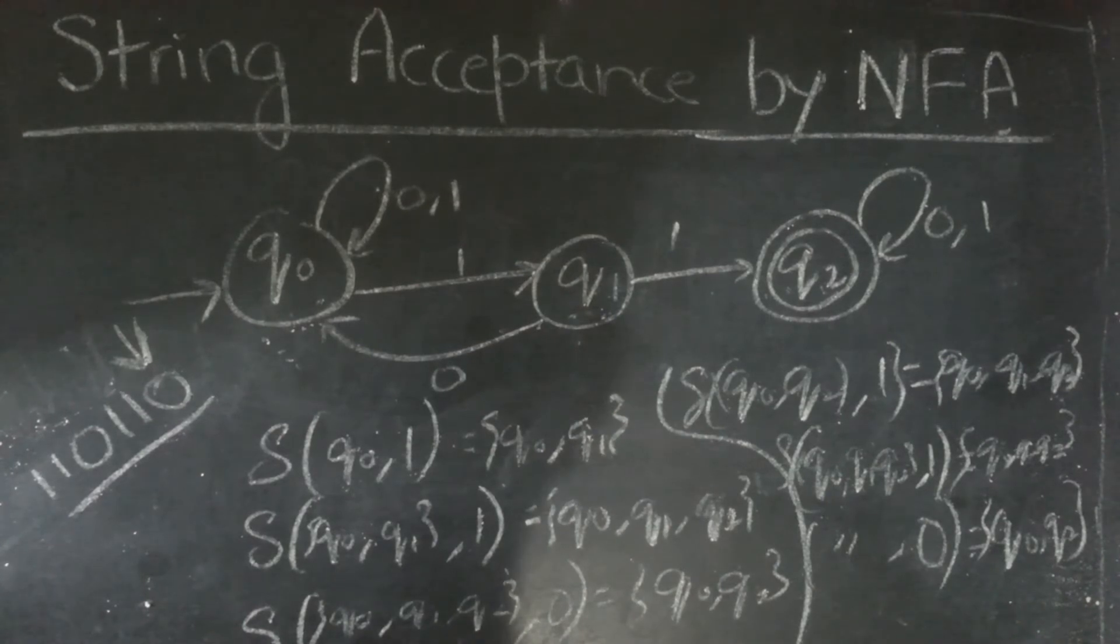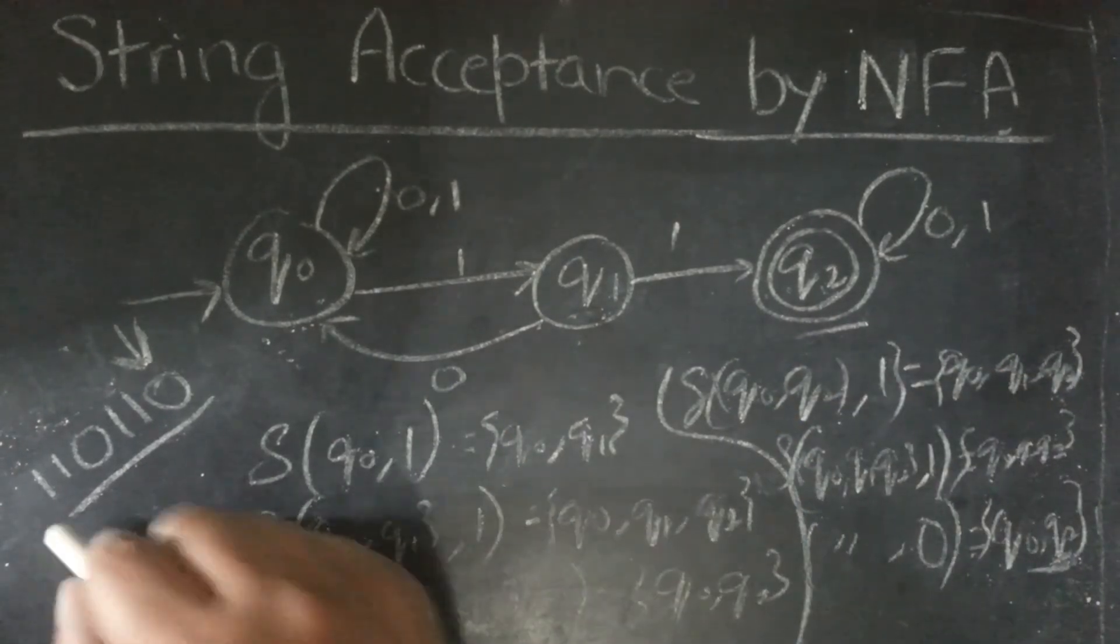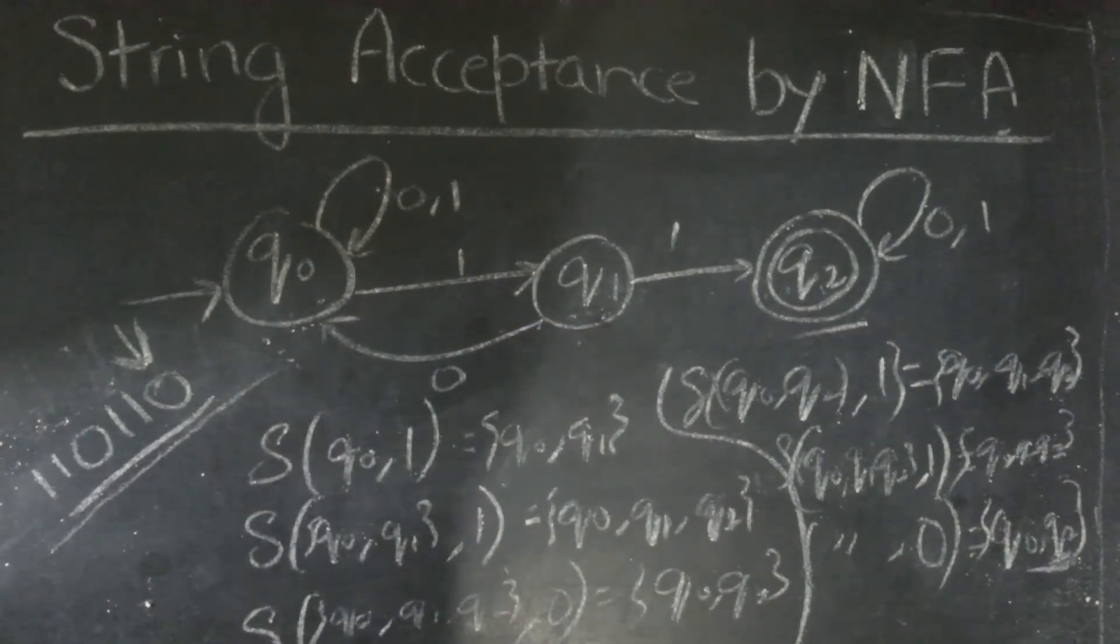Now, in the final answer, there is q2. So, if the final answer contains final state, then the whole string is accepted. Since the final answer contains q2, which is final state, we will say this string is accepted. Thank you.